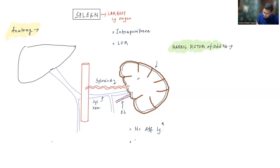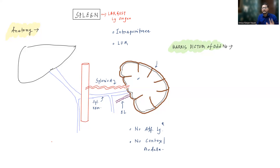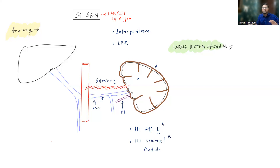The second difference is there is no clear-cut cortex and medulla in the spleen. Cortical and medullary differentiations are not present. In lymph nodes and thymus, we have cortex and medulla, but spleen does not have cortex and medulla.